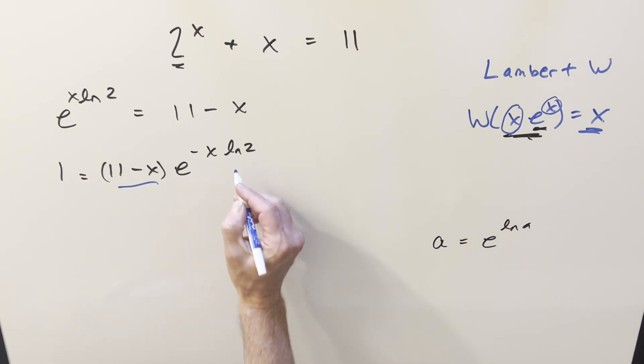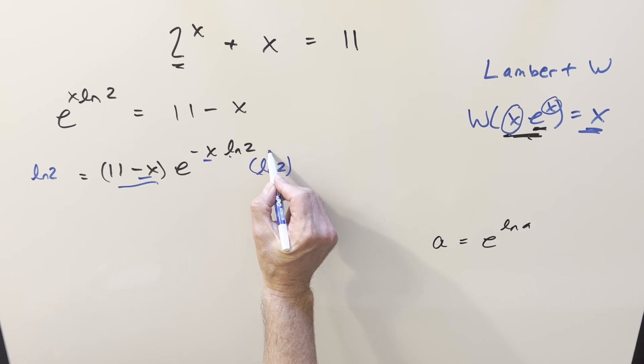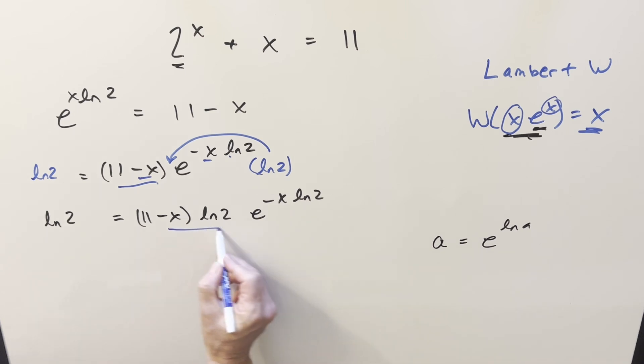So one thing I can do for that is we've got the minus x matches, but we need the ln 2, so I can multiply in ln 2 on both sides. And then let's just take this and I'm not really going to distribute it in, I think I'm just going to multiply it right in there. And so now the exponent matches this last part, but I need to get this 11 on it.